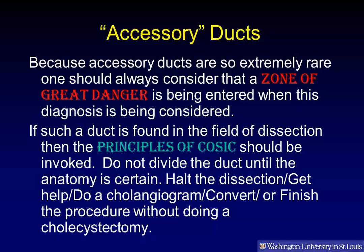Because accessory ducts are so extremely rare, one should always consider that a zone of great danger is being entered when this diagnosis is being considered. If such a duct is found in the field of dissection, the principles of COSSACK should be invoked: do not divide the duct until the anatomy is certain, halt the dissection, get help, do a cholangiogram, and convert or finish the procedure without doing a cholecystectomy.